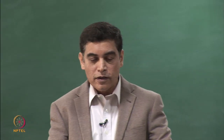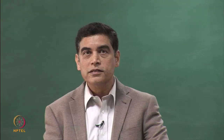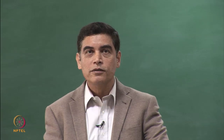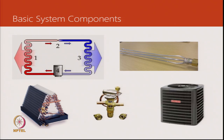We have not discussed much about what evaporators and condensers are like, so today we are going to cover that. In the basic system components, we have spent time on compressors and expansion devices, and we now want to look at evaporators and condensers. In this picture, 1 and 3 represent the condenser and evaporator as a process. We see an A-shaped evaporating coil, an expansion device, a condensing unit, and a distributor.